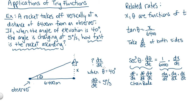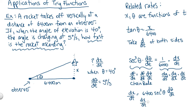Now, keeping in mind what we're trying to do — find dx/dt — let's rearrange this equation. dx/dt equals, multiplying both sides by 6,400, we get 6,400 times secant squared theta times d-theta/dt. For the calculation, our calculator does not have a secant button, so we remember that secant is the reciprocal of cosine. We can rewrite this as dx/dt equals 6,400 divided by cos squared theta times d-theta/dt.